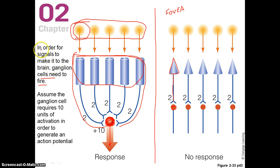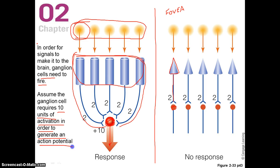In order for signals from the outside world to make it to your brain — for your brain to know that you're looking at something like light — not only does this light need to stimulate the rods, but the rods need to stimulate ganglion cells enough so that those ganglion cells pass that message on up to the brain. If this ganglion cell doesn't fire, it's as if you're not looking at anything. For this demonstration, let's assume that this ganglion cell requires 10 units of activation in order to generate an action potential. If it receives 9 or 8 units of activation, it won't be enough — it has to get 10.